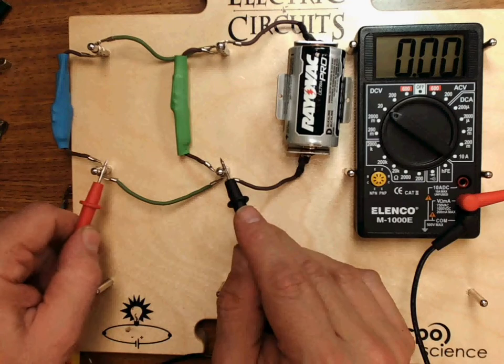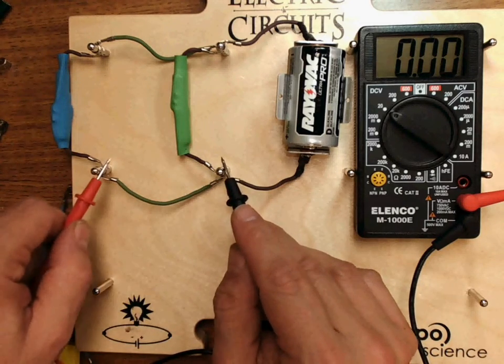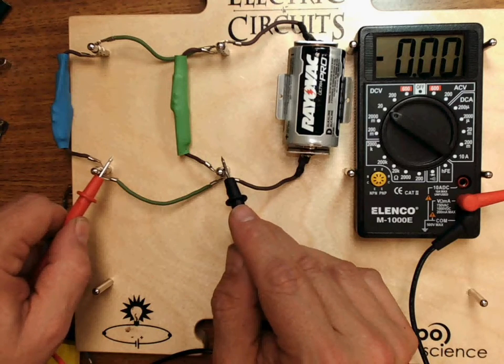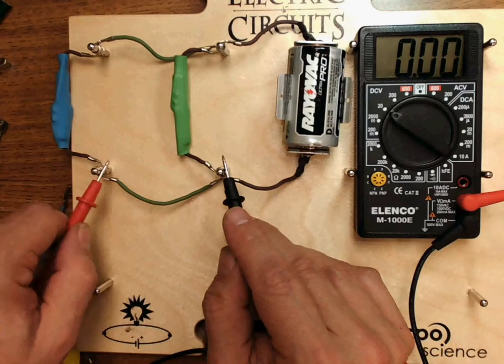If you attempt to measure like this you get zero. That's because this is one wire and there's nothing in between it. There's no circuit element, no resistor or lamp or anything in between these. So there's no potential difference between these two.